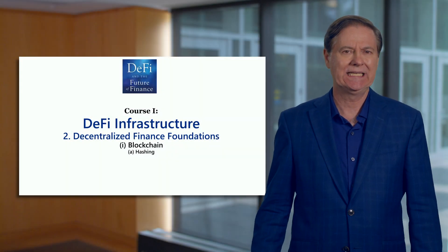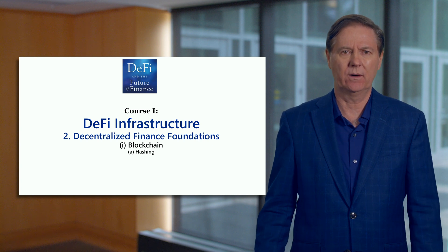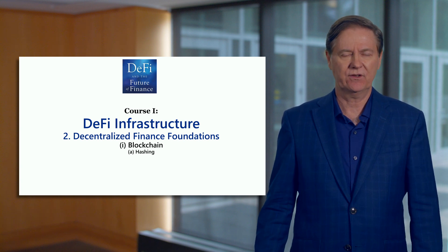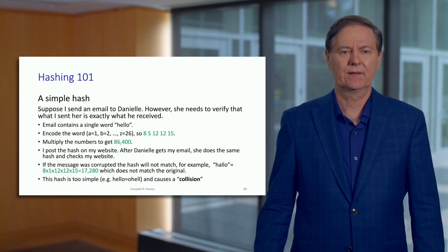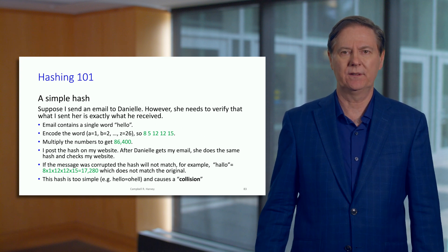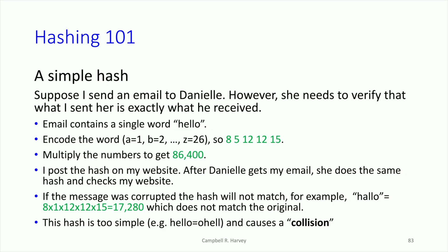I've talked about hashing, and this is really important for both Bitcoin and Ethereum and decentralized finance in general. I think it's important for you to have a deeper understanding about what is actually going on with hashing. Let me give you a really simple example — a simple hashing algorithm. I want to send an email to Daniel, but I'm a little worried because there could be a problem with the transmission, somebody potentially corrupting the email. So there needs to be some mechanism to verify that what I sent has not been corrupted.